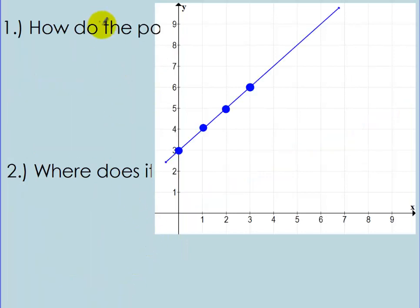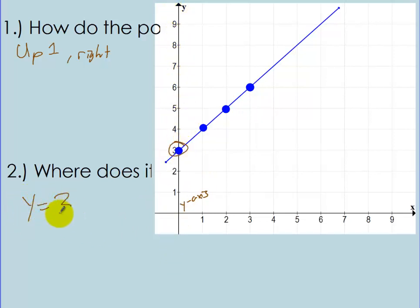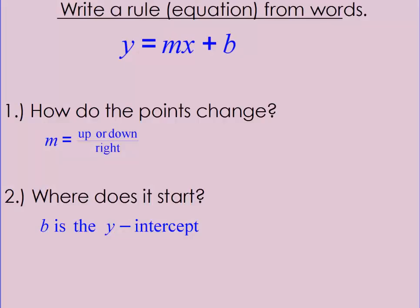Let's look at another one. How do the points change? It's going up 1, right 1, up 1, right 1 — so I'll write: up 1, right 1. That's the pattern showing how the dots are changing. And where does it start? It's starting right here when x equals 0, on the y-axis, and that's at y equals 3. So: up 1, right 1, and it's starting at y equals 3.